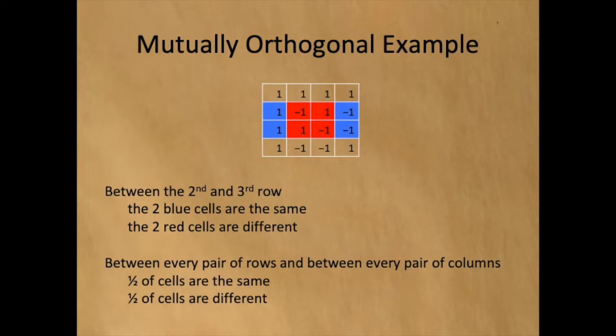Between every pair of rows and between every pair of columns, half of the cells are equal and the other half of the cells are different.